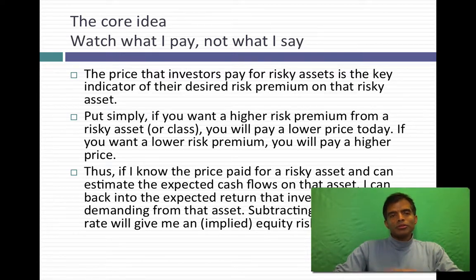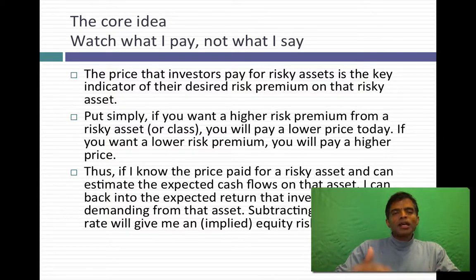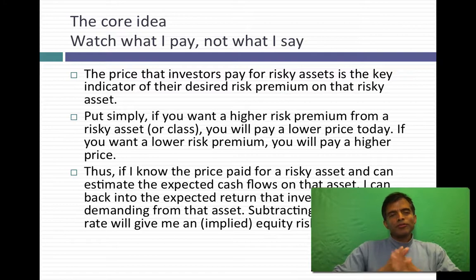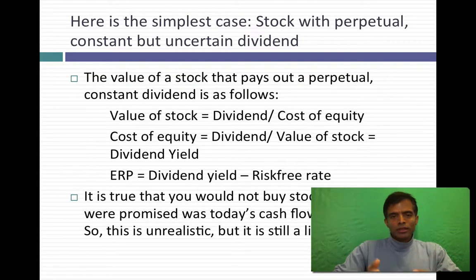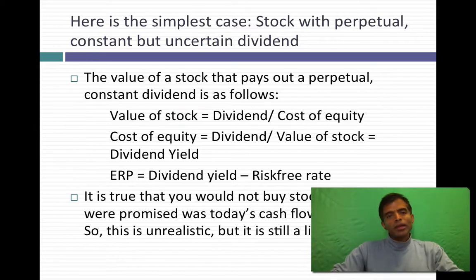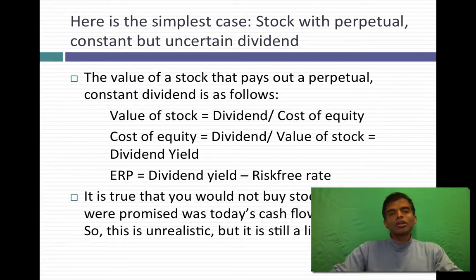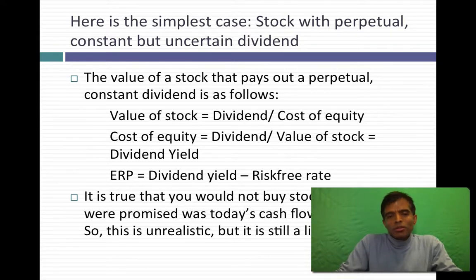The core idea I'm going to use to back out the equity risk premium is: I look at what you pay for an asset, and from that price I can back out what you demand as an expected return. Let's start with a simple proposition — assume equities pay constant dividends forever, a perpetuity. The value of that stock is the expected dividend divided by the cost of equity. A little algebra shows that the dividend yield on the stock becomes your expected rate of return, and the equity risk premium becomes the dividend yield minus the risk-free rate.